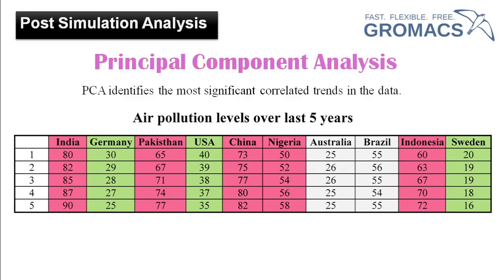You can see here two main trends — increase in pollution level and decrease in pollution level — have been captured. The five countries with increasing pollution have been clustered into a subset forming one principal component, and Germany, USA and Sweden have been clustered into the second principal component. So within this data set there are two principal components.